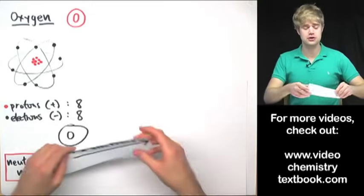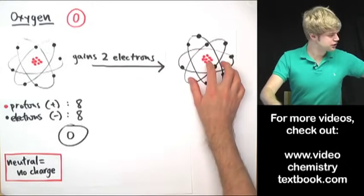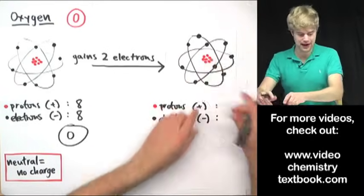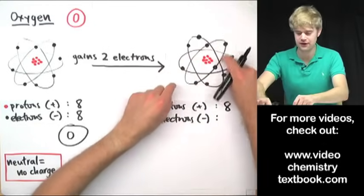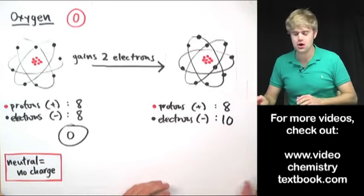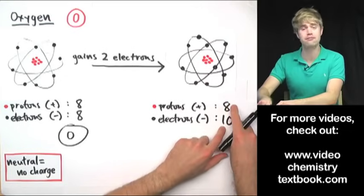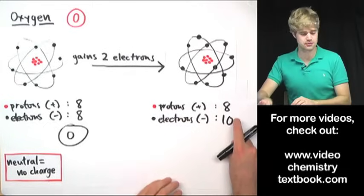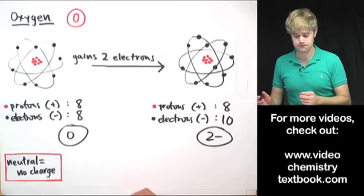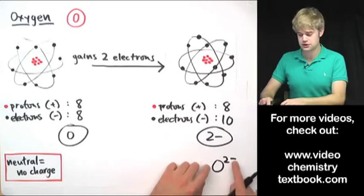But oxygen can gain or lose electrons and actually it really likes to gain 2 electrons. And here's a picture of the oxygen atom after it's gained 2 electrons. And now it still has 8 protons in the nucleus. And if I count up these electrons it now has 10 electrons instead of 8 which it had before. So now the protons and electrons don't balance out anymore. And I have more negative charge than I have positive charge. I've got 2 more electrons than protons. So that means that my total net charge is going to be 2 minus.